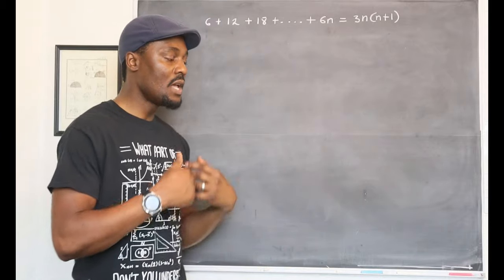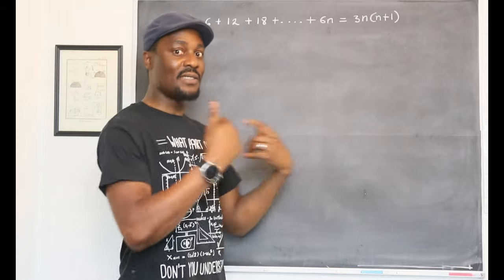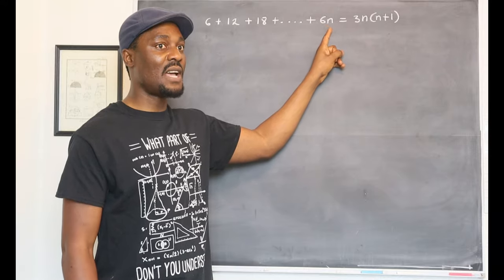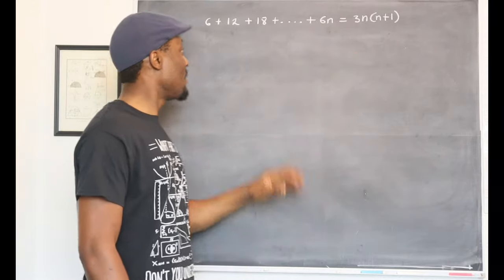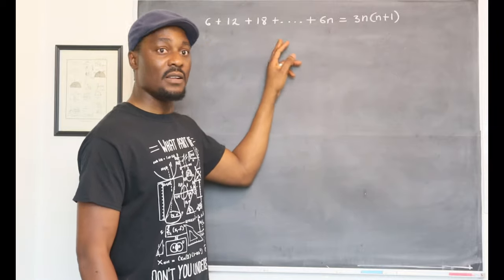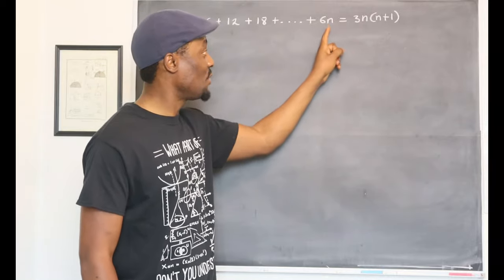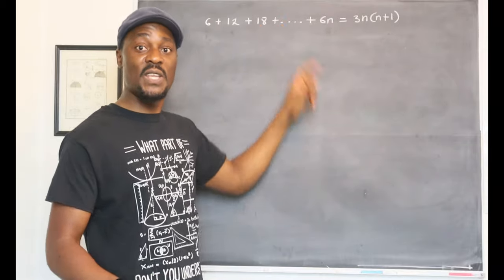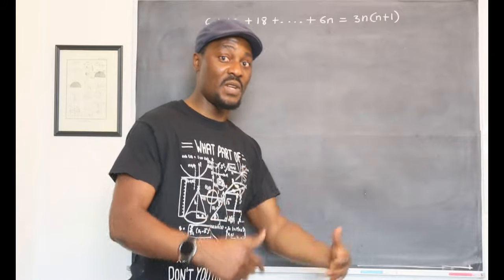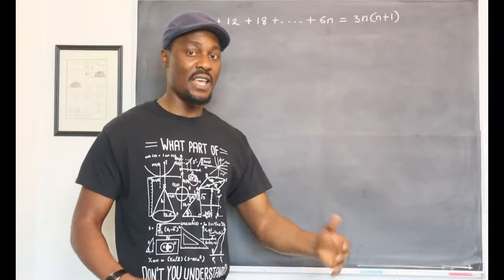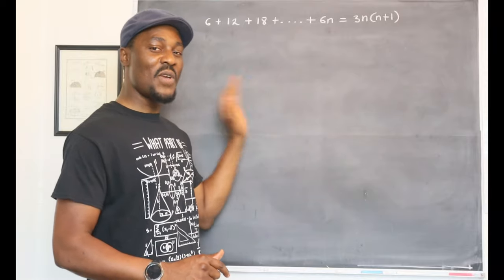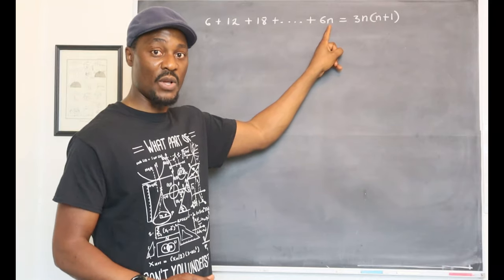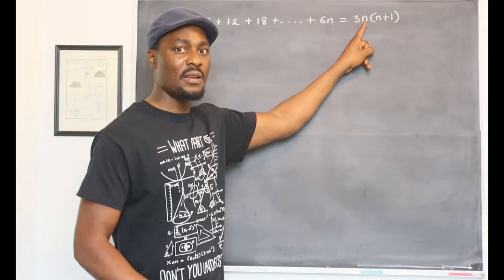For example, if you get to the tenth term, that tenth term will be 6 times 10, which is 60. What we're saying is if you add up all these terms in the series until you get to 60, you're going to go 18, 24, then 30, then 36, then 42, then 48, then 54, then 60. If you add up all those numbers, instead of you adding them up, why don't you just plug in, remember it was the tenth term, that's why we got 60. Why don't you just put 10 here?